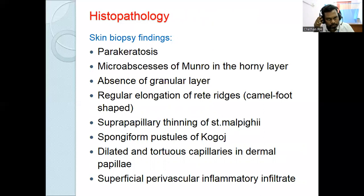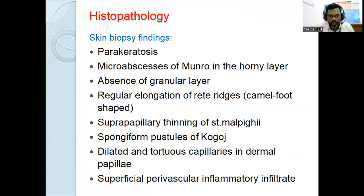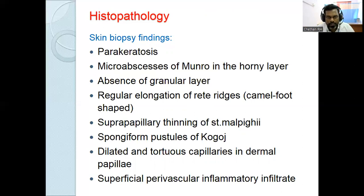Histopathology (skin biopsy findings) from epidermis to dermis: compact orthokeratosis, parakeratosis, hypogranulosis, regular acanthosis, and regular elongation of rete ridges (camel foot appearance). Suprapapillary thinning of the stratum spinosum. Two key signs: Munro's microabscesses (accumulation of neutrophils in the parakeratotic stratum corneum) and spongiform pustules of Kogoj (accumulation of neutrophils in the stratum spinosum). Dilated and tortuous capillaries in dermal papillae, and superficial perivascular inflammatory infiltrate.